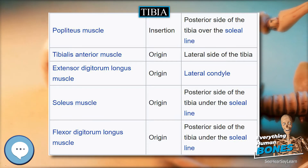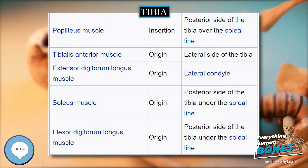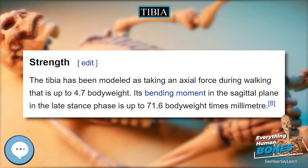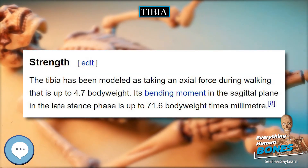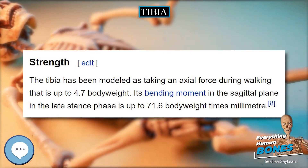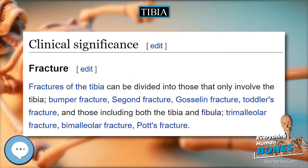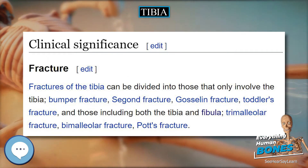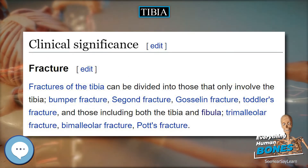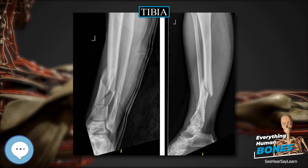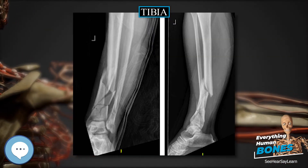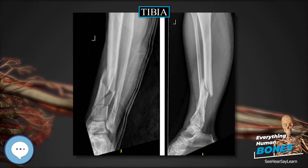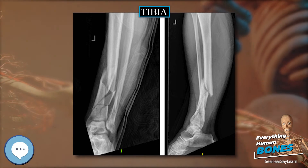Lower extremity. The distal end of the tibia is much smaller than the proximal end and presents five surfaces. It is prolonged downward on its medial side as a strong pyramidal process, the medial malleolus. The lower extremity of the tibia together with the fibula and talus forms the ankle joint.